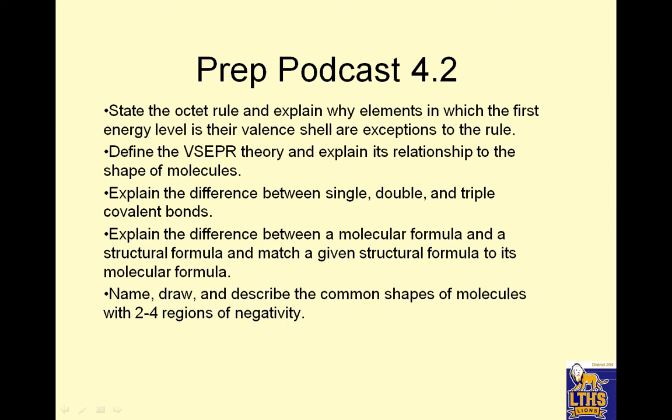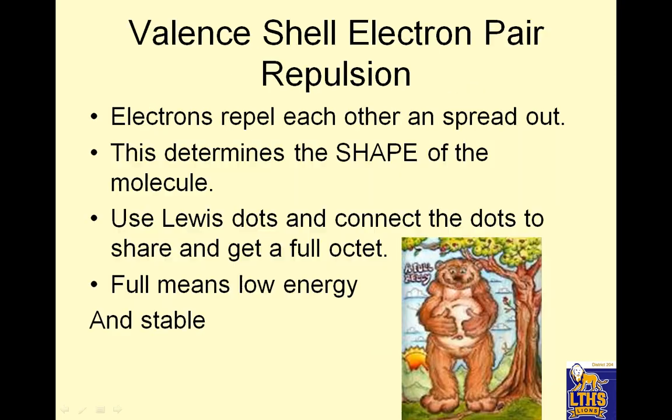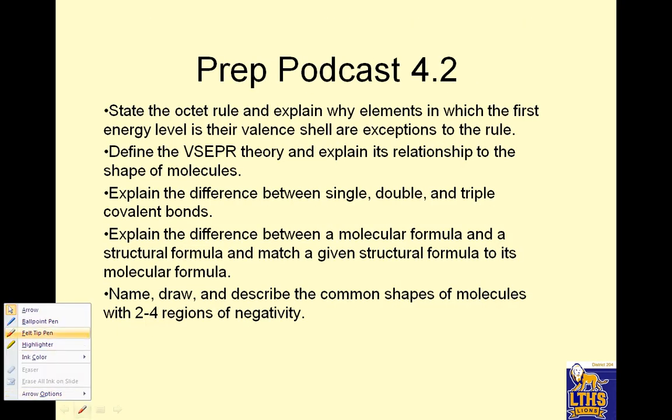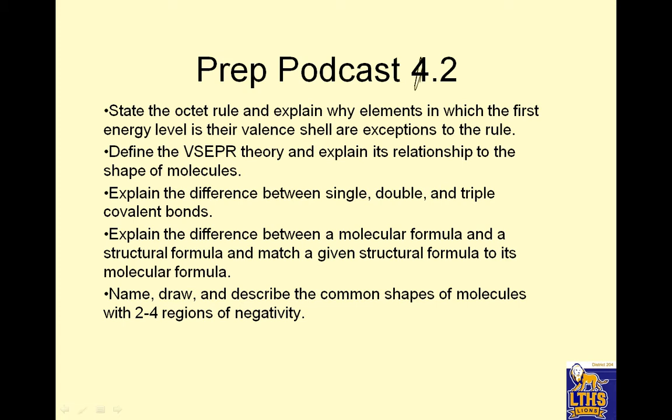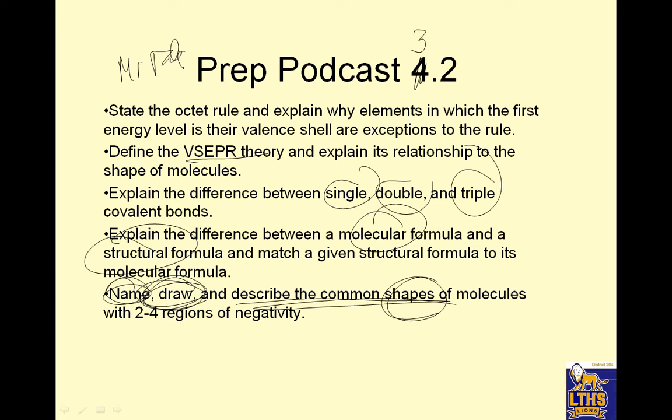Hi everybody, this is Mr. Folly, and welcome to podcast 3.2. We'll state the octet rule and explain why elements in the first energy level with their valence shell are an exception to the rule. Define VSEPR, explain the difference between single, double, and triple bonds, and explain the difference between a molecular formula and a structural formula. We're going to draw, talk about shapes, name those shapes, and describe the shapes of molecules with two to four regions of negativity.